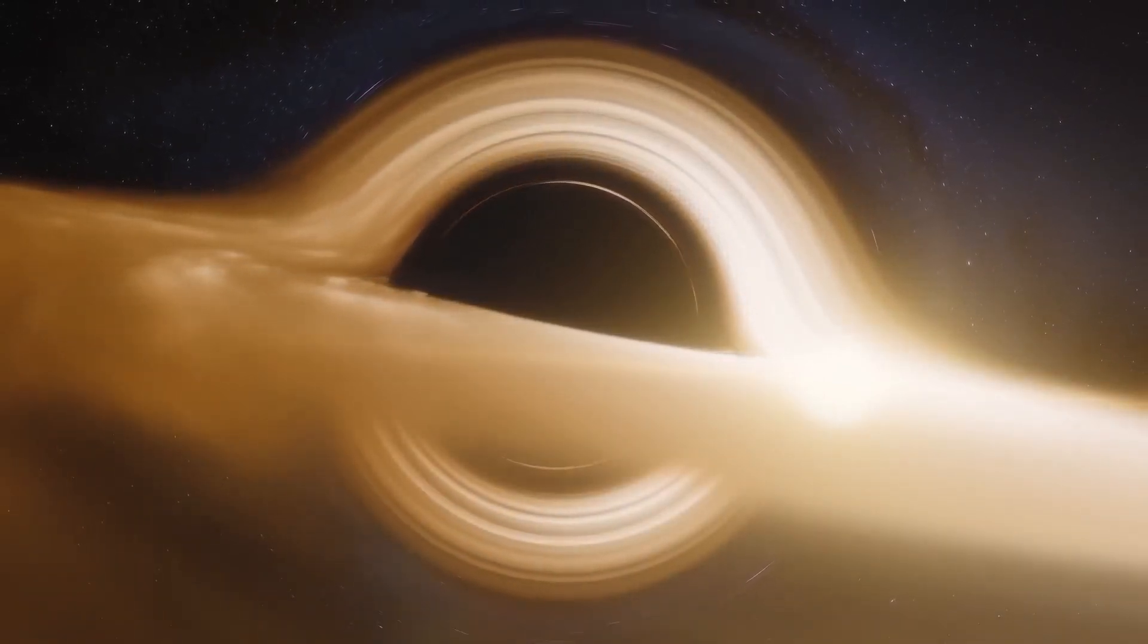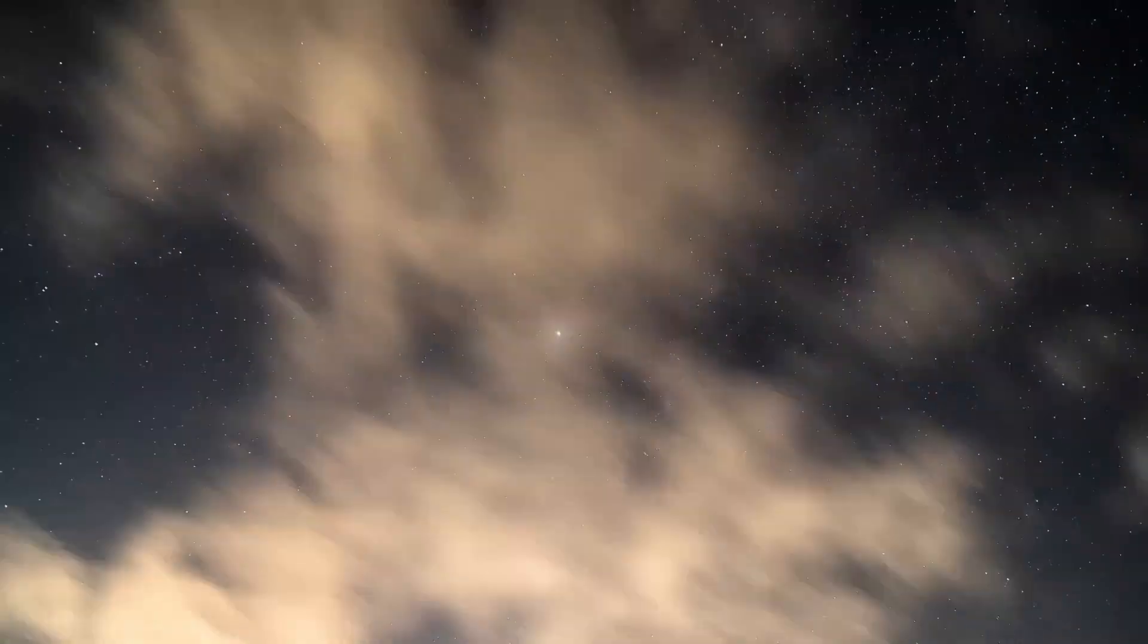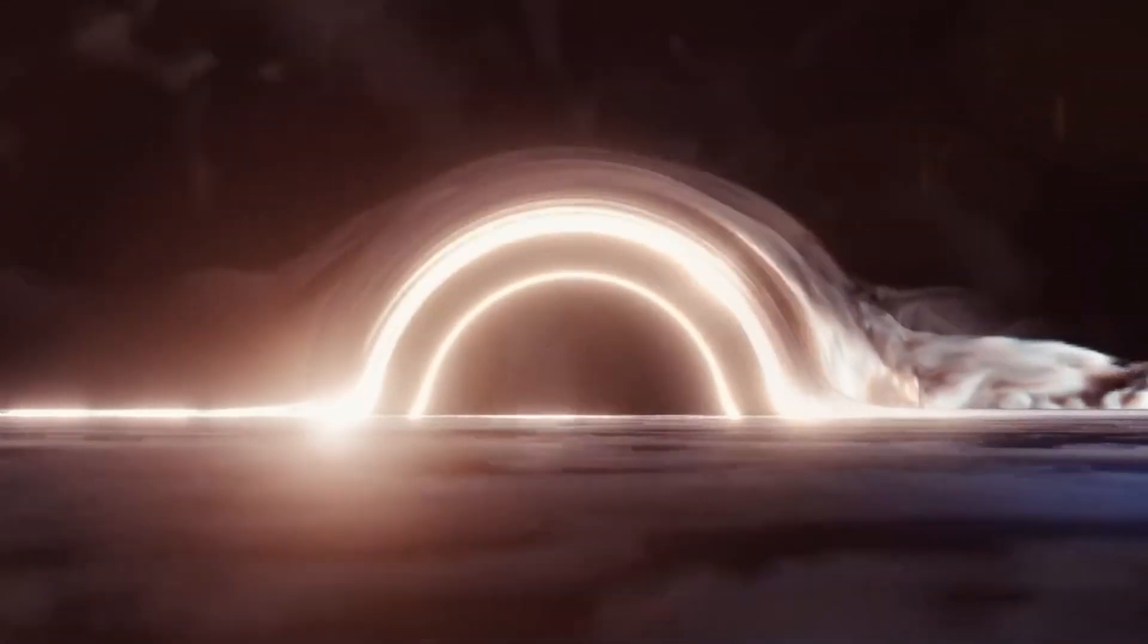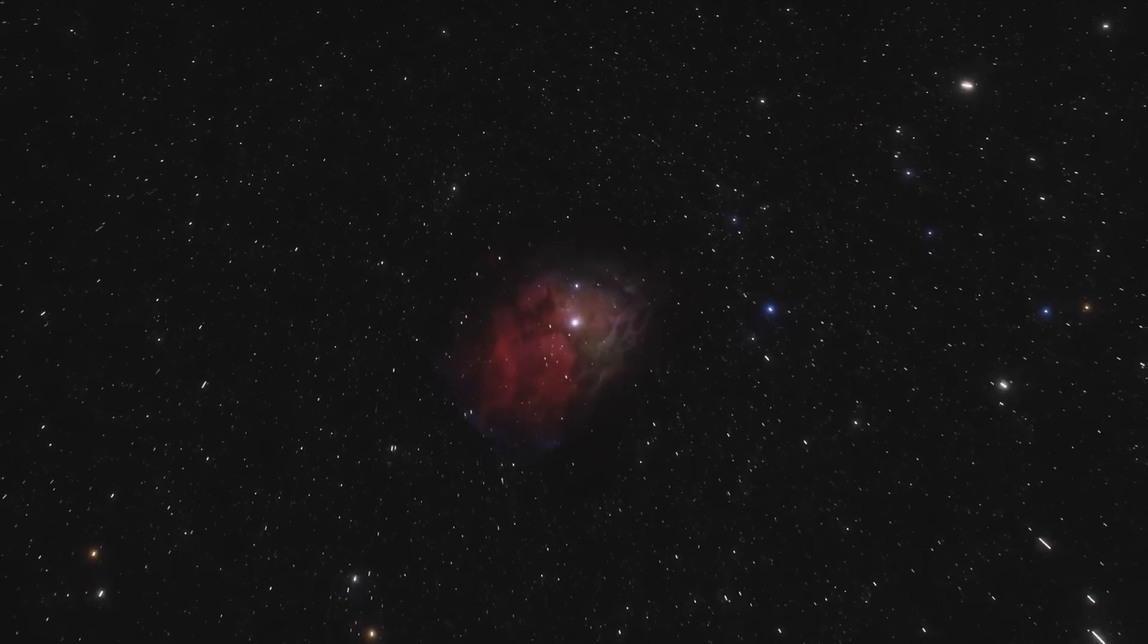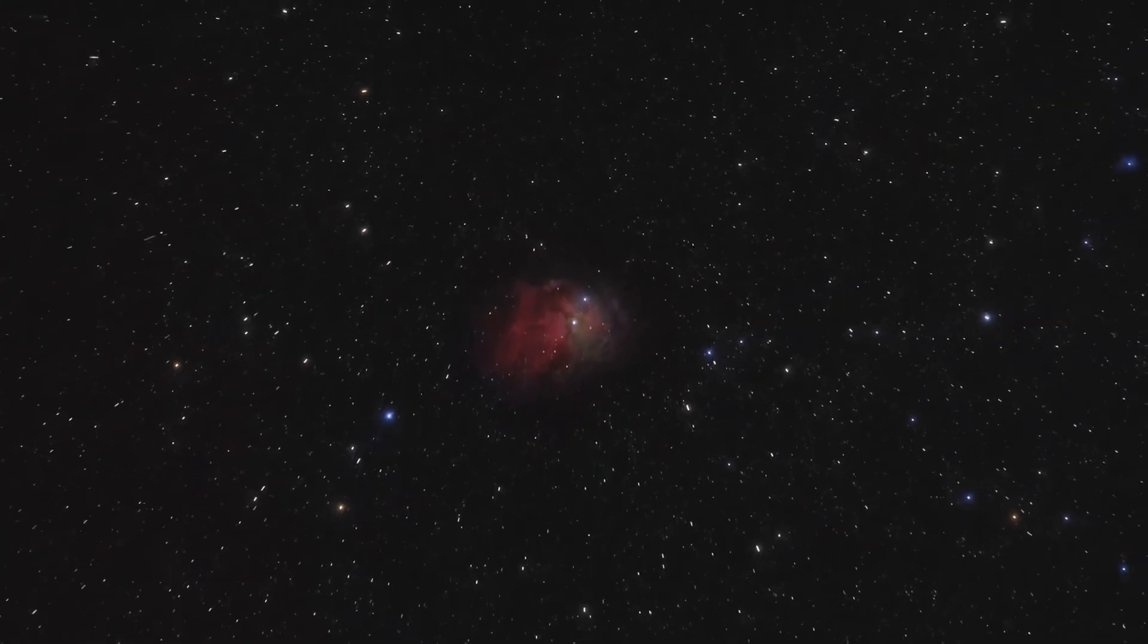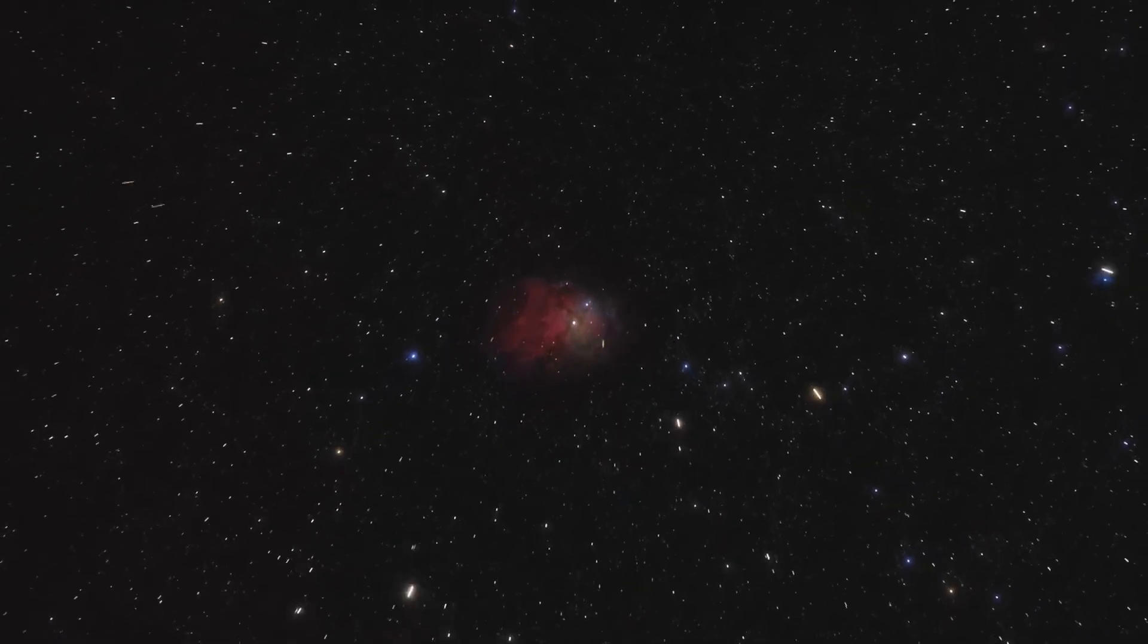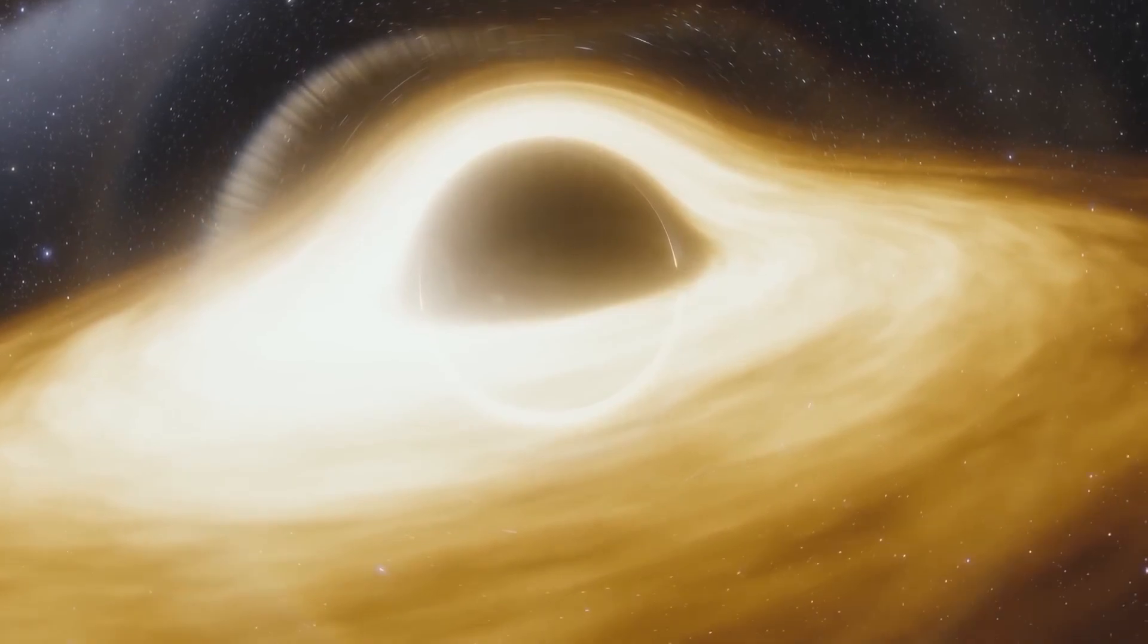One theory regarding the fate of an object falling into a black hole is known as spaghettification, a term coined for the extreme tidal forces that would be experienced. As an object approaches the event horizon of a black hole, the gravitational pull on its near side becomes significantly stronger than on its far side, causing it to be stretched and elongated into a long, thin shape resembling a strand of spaghetti.